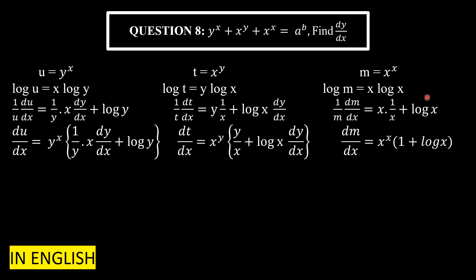Moving to the third case: m = x^x. Similarly, take log: log(m) = x·log(x). Differentiate both sides with respect to x to get (1/m)·(dm/dx). On the right-hand side, apply the product rule: first function x as-is, multiplied by the derivative of log(x) which is 1/x; plus log(x) as-is, multiplied by the derivative of x which is 1. So: (1/m)·(dm/dx) = x·(1/x) + log(x).